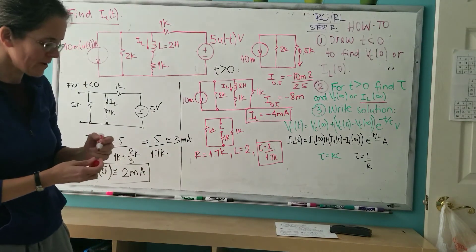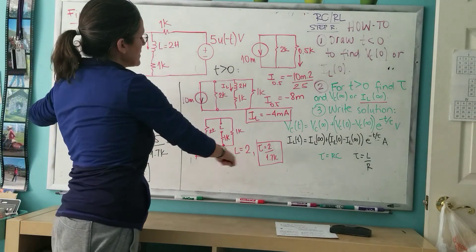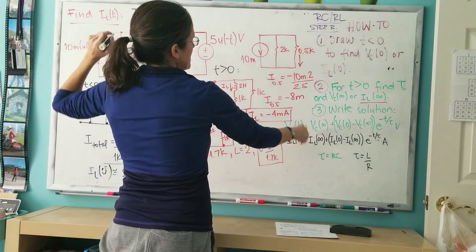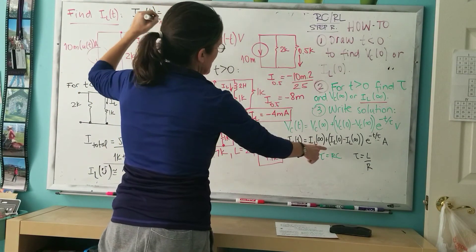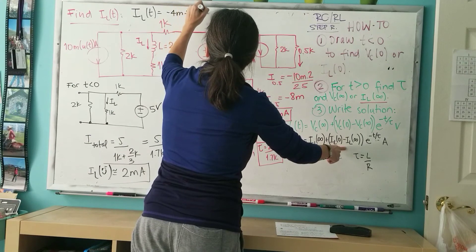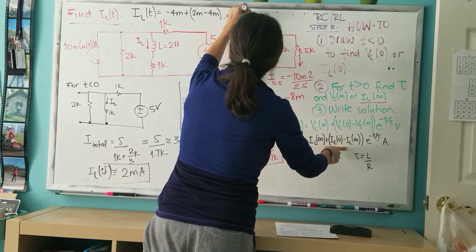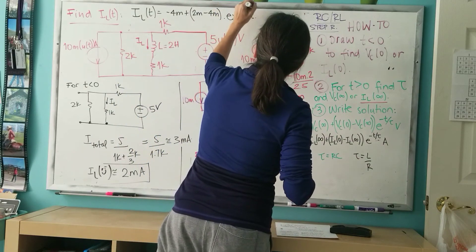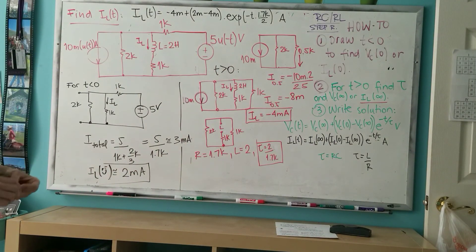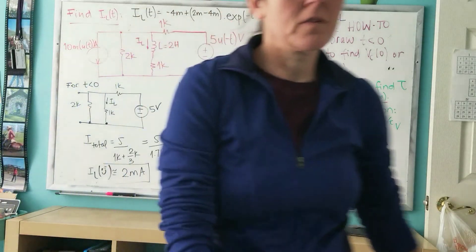IL of t, which is the final question, is to find IL of t. You'd answer by plugging these three numbers into our predefined formula. IL of t is IL of infinity, minus 4, plus IL of zero minus, which is 2, minus IL of infinity, minus 4, so 2 minus negative 4, times the exponential minus t divided by tau, which is 1.7k divided by 2 mH. I hope that explains how I am expecting you to solve RL circuits by analyzing two different circuits: one for t less than zero, one for t larger than zero.